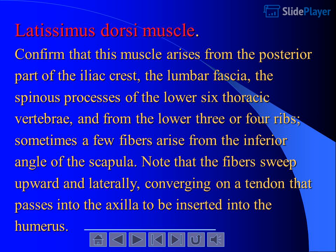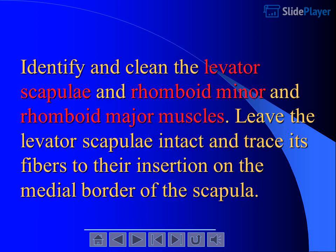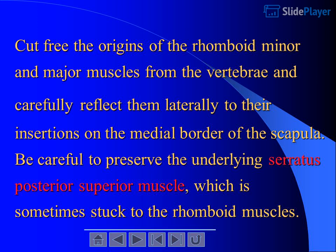Latissimus dorsi muscle: confirm that this muscle arises from the posterior part of the iliac crest, the lumbar fascia, the spinous processes of the lower 6 thoracic vertebrae, and from the lower 3 or 4 ribs. Sometimes a few fibers arise from the inferior angle of the scapula. Note that the fibers sweep upward and laterally, converging on a tendon that passes into the axilla to be inserted into the humerus. Transect the origin of the latissimus dorsi and reflect the muscle laterally, thus exposing the underlying serratus posterior inferior muscle.